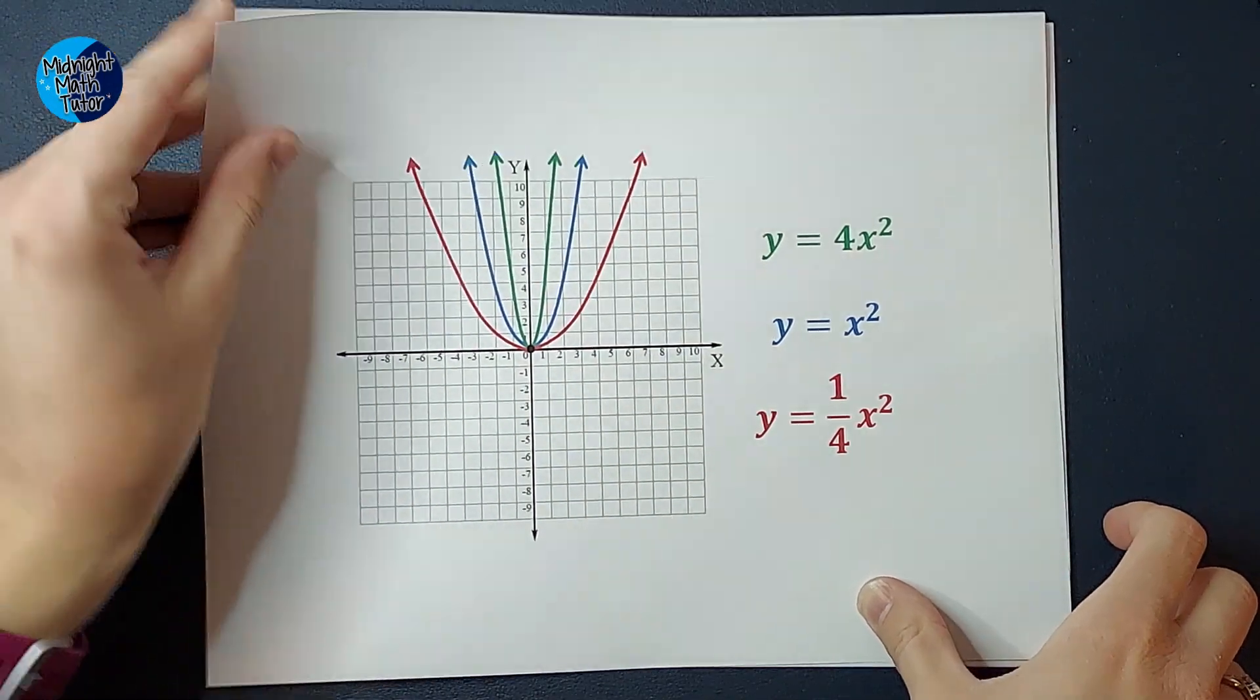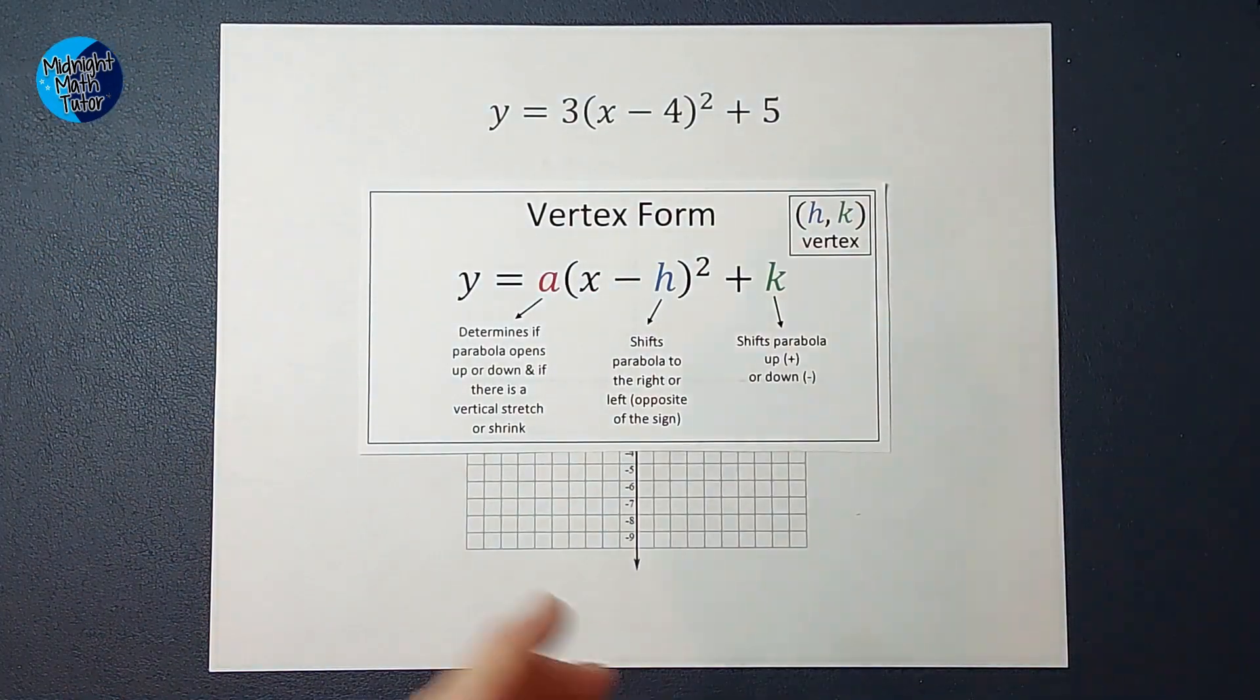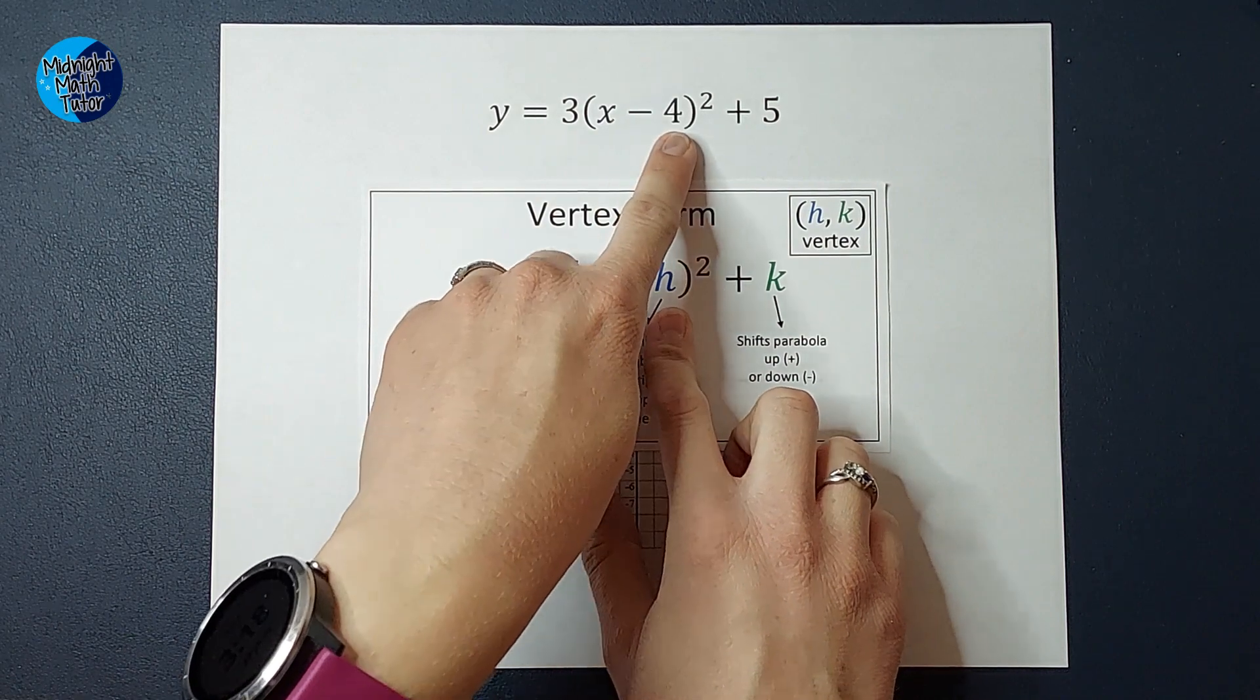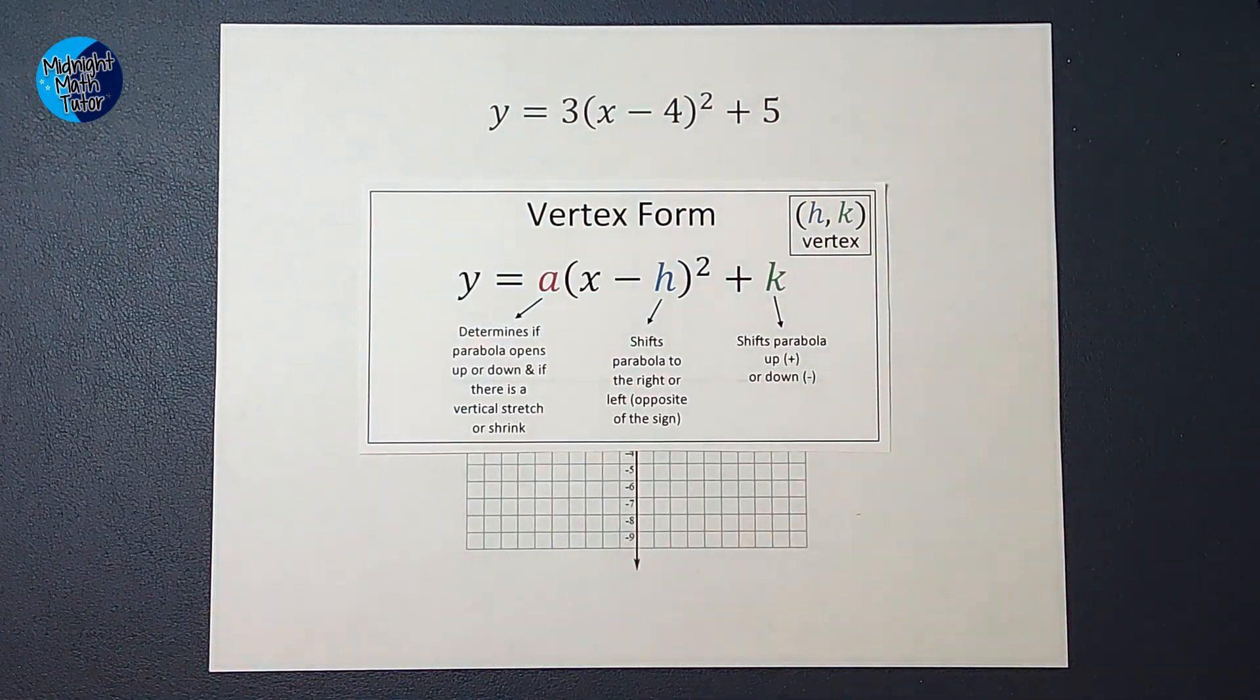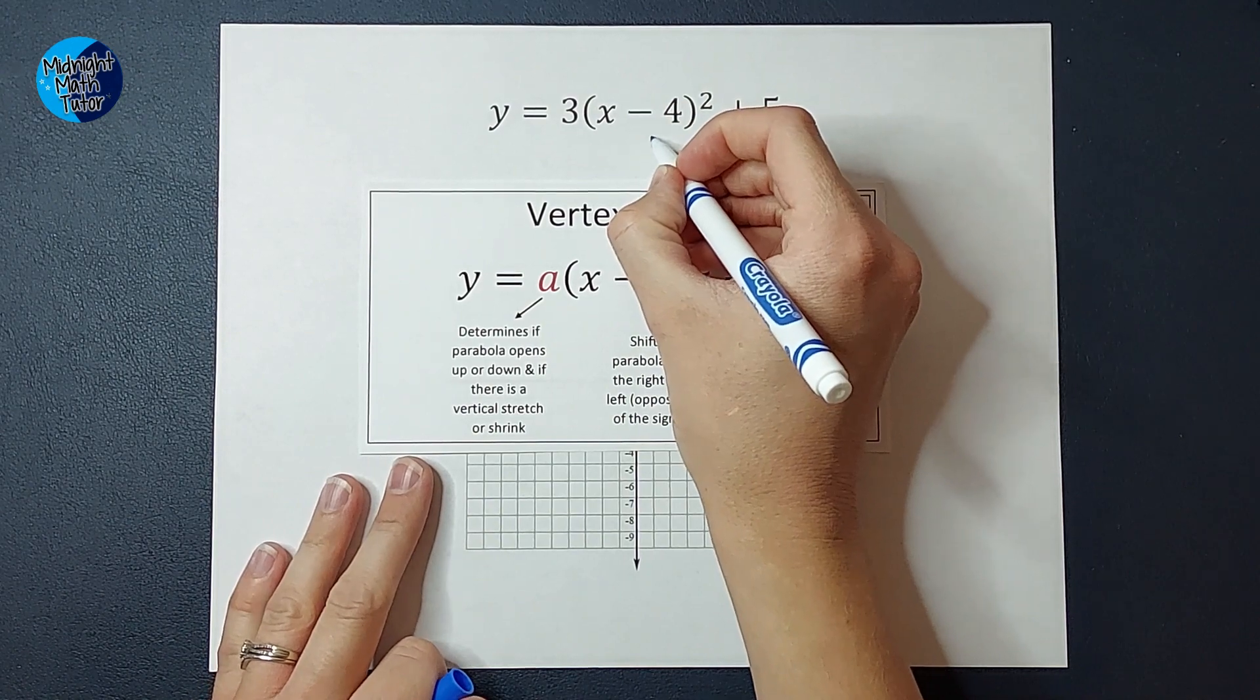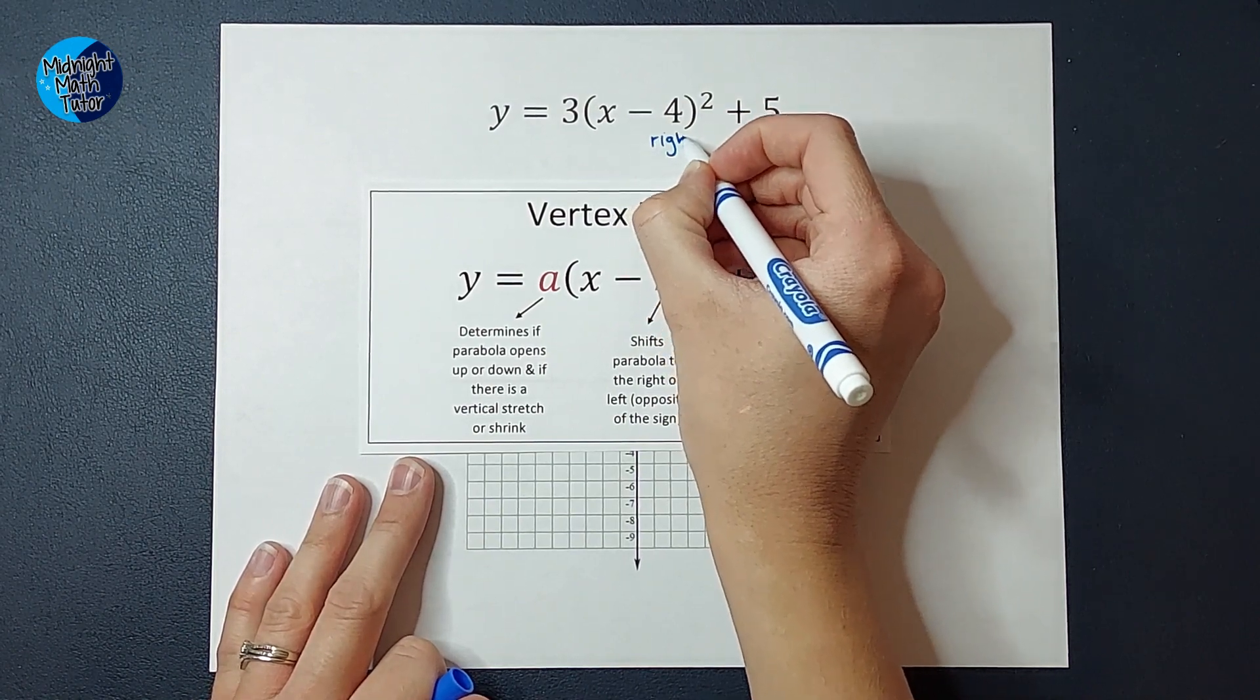And then these numbers shift where the vertex is. So this number here tells you how far to the right or left the vertex is shifted. And you actually do opposite of the sign. So when you see that negative four, you might think, oh, to the left four. But you actually do opposite of the sign. So we are going to go to the right four.